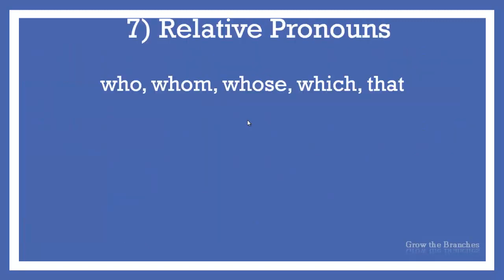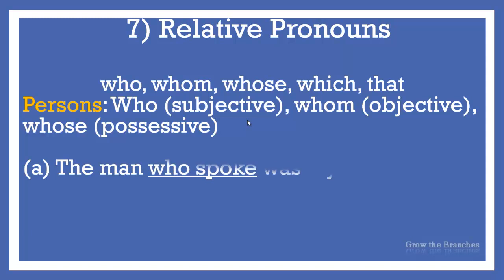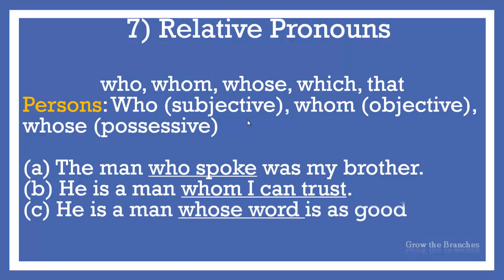The relative pronouns are: who (subjective), whom (objective), whose (possessive), which, and that. They have the same forms for singular or plural, masculine or feminine. They take place immediately after the noun they are related to. For example: The man who spoke was my brother. He is a man whom I can trust. He is a man whose word is as good as his bond. In A, who functions as the subject of the verb spoke — since man is the subject of spoke, we replace it with the subjective pronoun who. In B, whom functions as the object of the verb trust — whom here replaces man, but because it functions as object, we use whom and not who in academic English. Equally, whose word shows possession and literally means his word or the man's word.